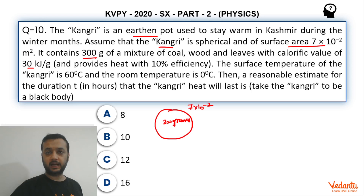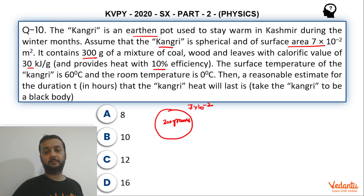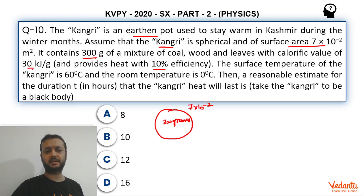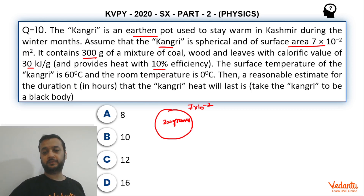The calorific value of this substance is 30 kilojoules per gram, meaning if 1 gram burns, 30 kilojoules of heat is produced. But the efficiency is only 10%, so the heat available is 10% of that. Effectively, the calorific value is 3 kilojoules per gram.